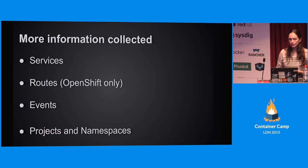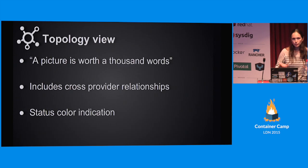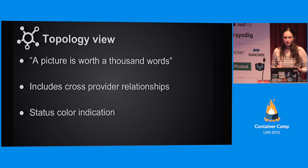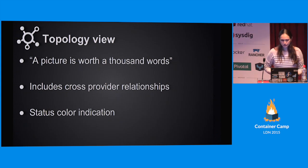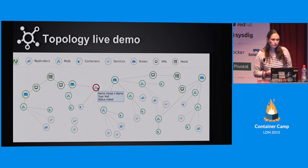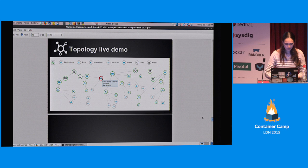There's a lot more information collected - services, routes, events, projects, and namespaces - and I invite you to check the project. There's also another way to look at the information and see what is connected to which entity, and that's the topology view. A picture is worth a thousand words, but actually the live demo is much cooler - I'll go with the live demo.